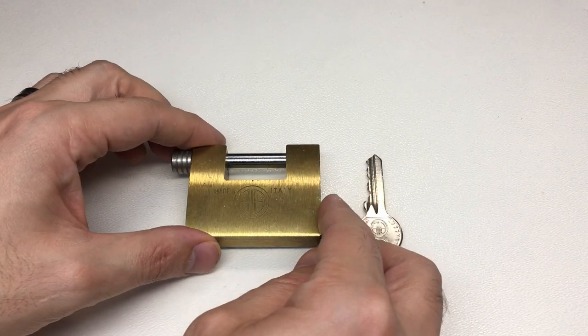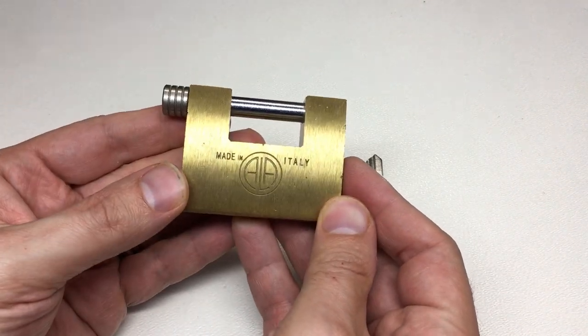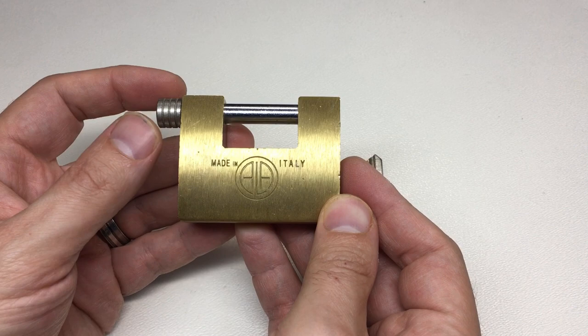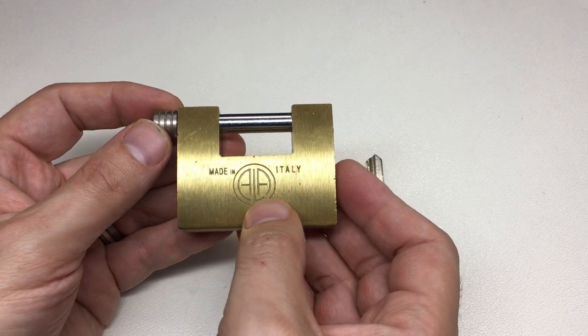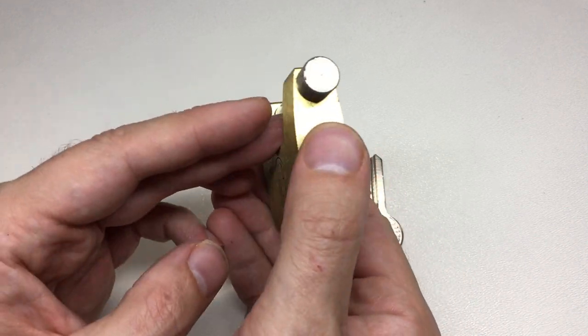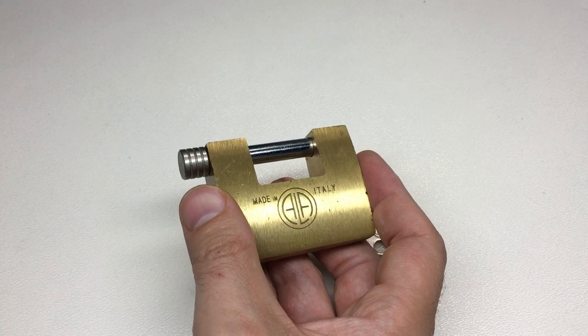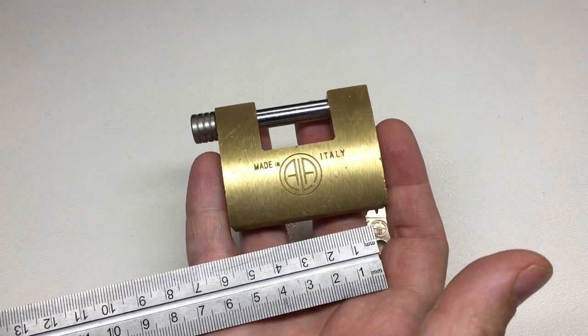Hello again, it's Lock Noob. In front of us we have a little brass monoblock shutter lock made in Italy, an Ala padlock. Really cute little lock, not particularly big. Let's have a look.